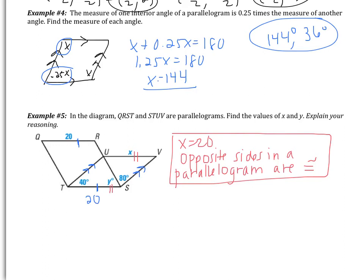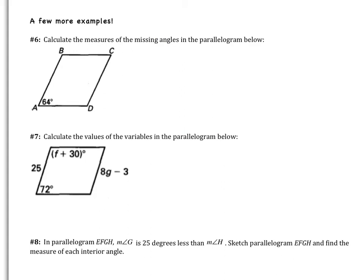Before we finish, flip to the next page. We have a few more examples — watch them if beneficial. Example six: calculate the measures of missing angles in the parallelogram below. Opposite angles are congruent, so if A is 64 degrees, then C is also 64 degrees. Consecutive angles are supplementary, so angle A plus angle D equals 180: 64 plus angle D equals 180, giving angle D equals 116 degrees. Since B and D are opposite, angle B is also 116 degrees.